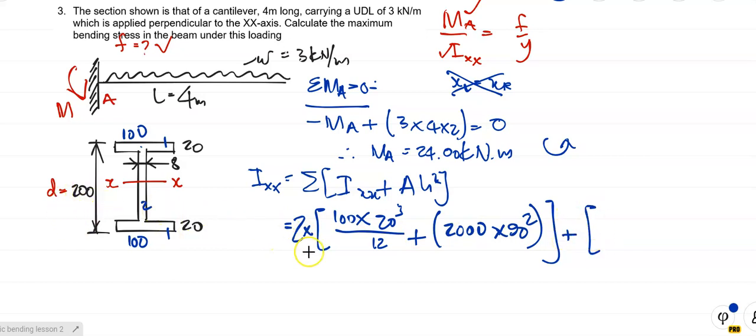Plus element number 2. It's BD cubed over 12. What's B? B is 8. 8 times D. D is the distance from there to there. So what's the distance? It is 200 minus 40. What's 200 minus 40? So it's 160 cubed over 12. Plus the area. What's the area? The area is 8 times 140. But H for element number 2, it sits exactly at the same position as the center of the whole cross section. So this bit here is 0.